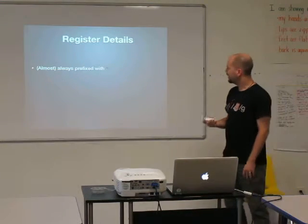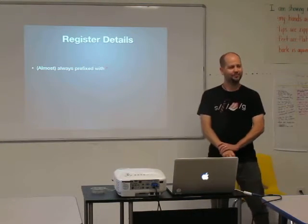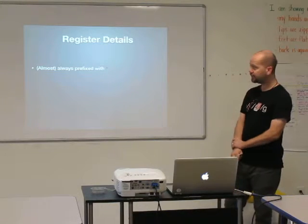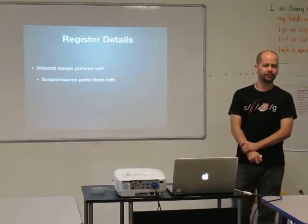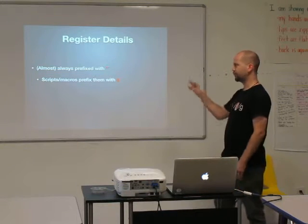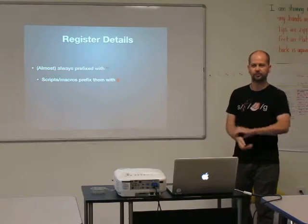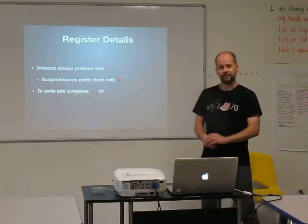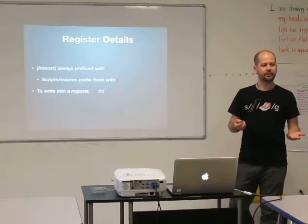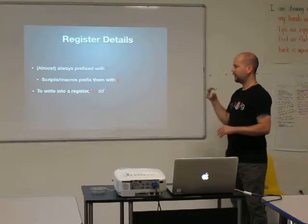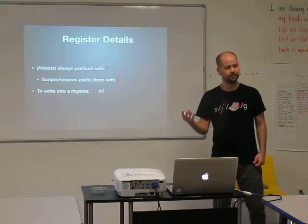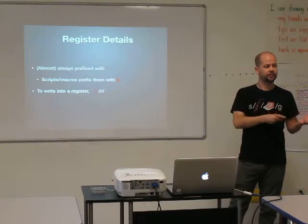Registers, as they are written, are prefixed with double quote characters, unless you're doing scripts or macros, in which case you will actually prefix them with an at sign. Generally speaking, when registers are referred to in the VIM documentation, they will be prefixed with quotes — that's just generally how they're referred to. To write into a register — to put text into a register — you simply prefix a command that would write into a register, like a delete or a yank/copy command, with a double quote to signify you're talking about a register, then you name the register. In this case, this would be the R register — we would delete a line and put it into the R register.